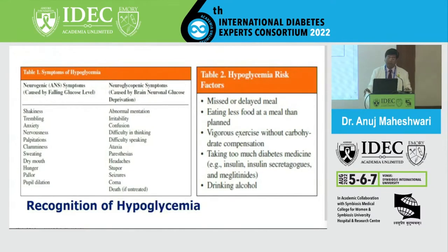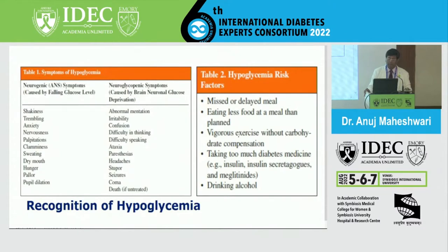The second category is neuroglycopenic symptoms, caused by brain neuronal glucose deprivation. These include: abnormal mentation, irritability, confusion, difficulty in thinking, difficulty in speaking, ataxia, paresthesia, headaches, stupor, seizures, coma, and if not treated well, death may also occur.